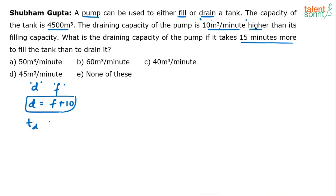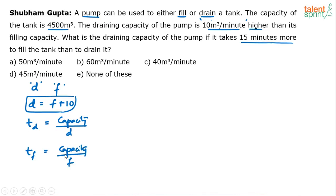Now, time taken to drain equals the total capacity of the tank divided by the draining capacity. The total volume is 4500. So 4500 divided by the draining capacity D gives the time taken to drain. Similarly, 4500 divided by filling capacity F gives the time taken to fill. So TD equals 4500 divided by D, and TF equals 4500 divided by F.